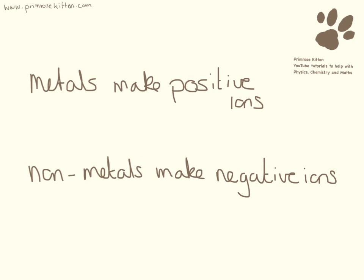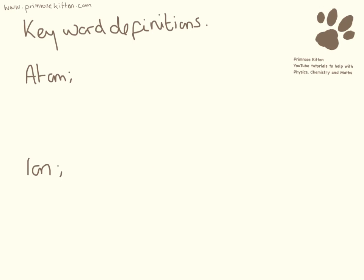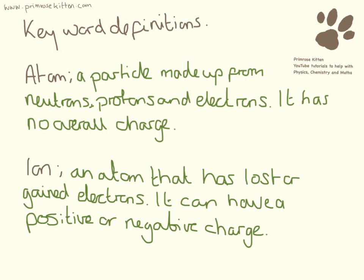So, you need to know that metals make positive ions, and non-metals make negative ions. And you need to know the definitions of an atom and an ion. An atom is a particle made up from neutrons, protons, electrons. It has no overall charge. And an ion is an atom that has lost or gained electrons. It can have a positive or a negative charge.